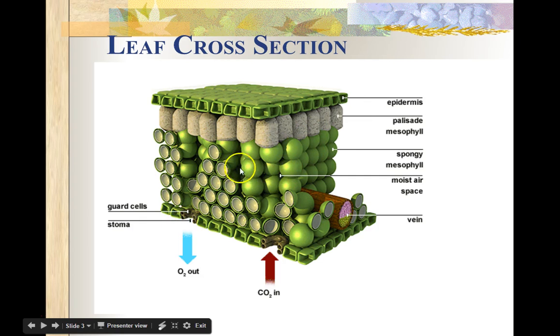So this is just moist airspace that allows for these gases to be distributed from a higher concentration to an area of lower concentration. So what's interesting about plants is that they have the ability to open and close these tiny little stoma.